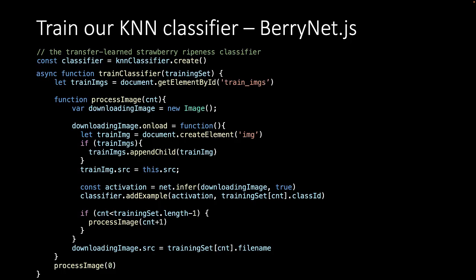Then we go through all the training images and feed them to the MobileNet. Here we use the net.infer method to get the list of numbers from the general model. We then add an example to the classifier, feeding it the list of numbers and the class ID of the training image. In this way we have given the KNN classifier all our training data.